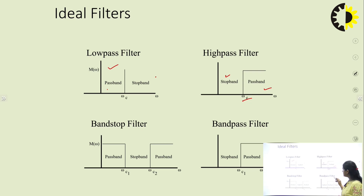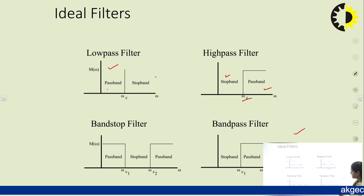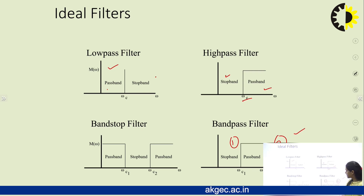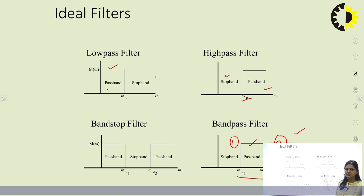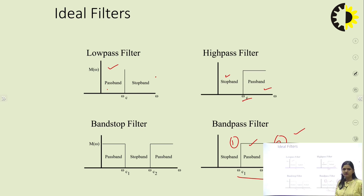Similarly, we can define the response for the band pass filter. There is one pass band and two stop bands — one at the lower frequency side and one at the higher frequency side. This filter selects a particular band of frequency between omega c1 and omega c2. Frequencies within this band are passed, and frequencies outside this band are attenuated — that is why it is called a band pass filter.